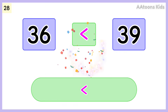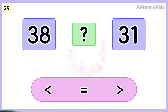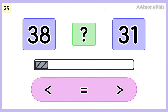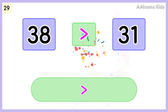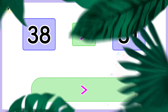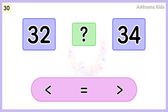Thirty-six is less than thirty-nine. Choose the correct symbol. Thirty-eight is greater than thirty-one. Pick the correct symbol.